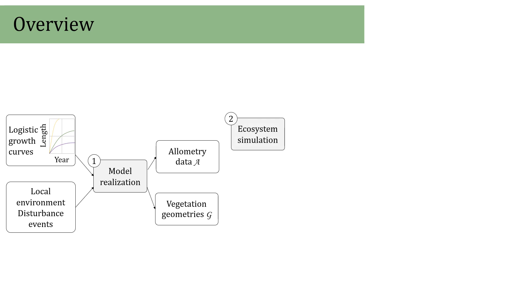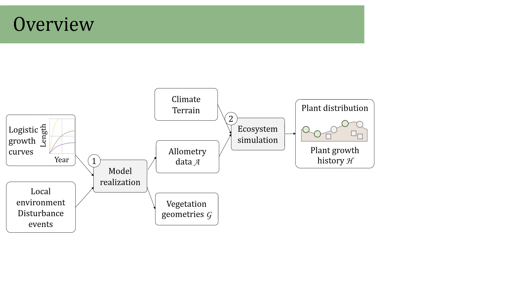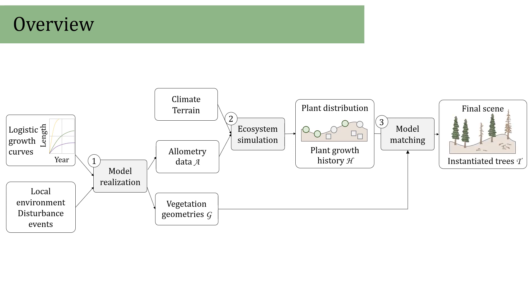The second step involves the simulation of a full ecosystem using the allometry data, terrain conditions, and disturbance scenarios over time that allow us to obtain the distribution and state of all trees, snags, or logs in a scene at any given time. Finally, we combine the geometries and the plant data using a matching process to instantiate the final 3D scene.